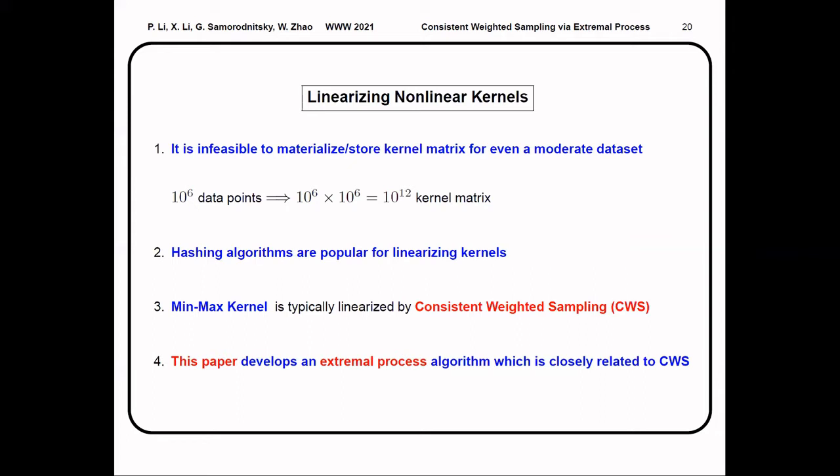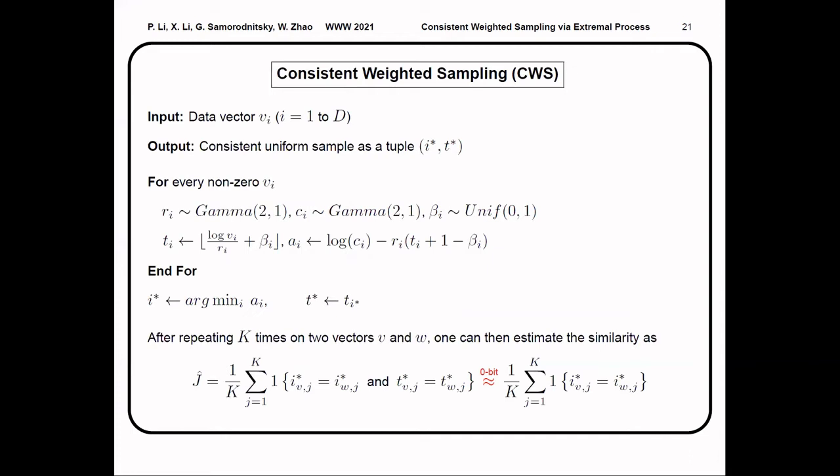In this context, hashing algorithms are popular for linearizing the nonlinear kernels. And the min-max kernel is typically linearized by the method called consistent weighted sampling, or CWS in short. In this paper, we develop an extremal process algorithm, which is closely related to CWS.